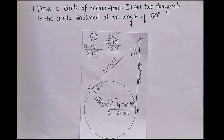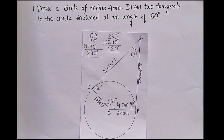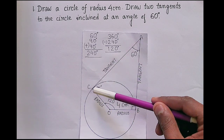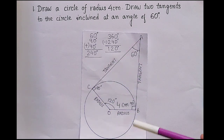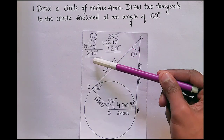We have to draw two tangents. One thing we know about tangents: the tangent is always perpendicular to the radius, meaning the angle will be 90 degrees here, and also 90 degrees on the other side. They have given 60 degrees, so in total we have three angles: 60 degrees and two 90 degrees.